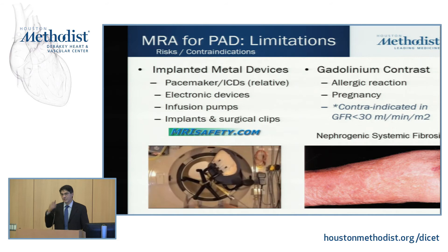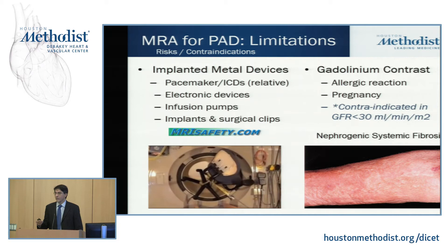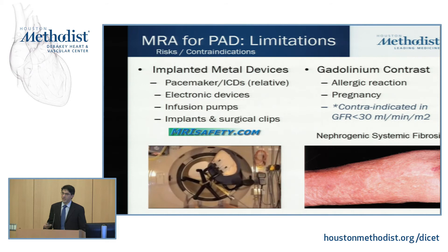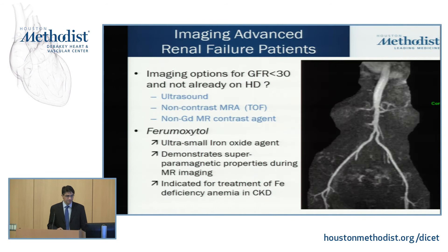There is a risk with gadolinium administration in patients with GFRs less than 30 of nephrogenic systemic fibrosis. We feel this risk is significantly reduced with the now more common use of macrocyclic agents. Allergic reactions with gadolinium are very rare — much less common than with iodine. Importantly, there is a patient population without a good test: those with GFR less than 30 who are not on hemodialysis cannot get iodine and cannot get gadolinium.